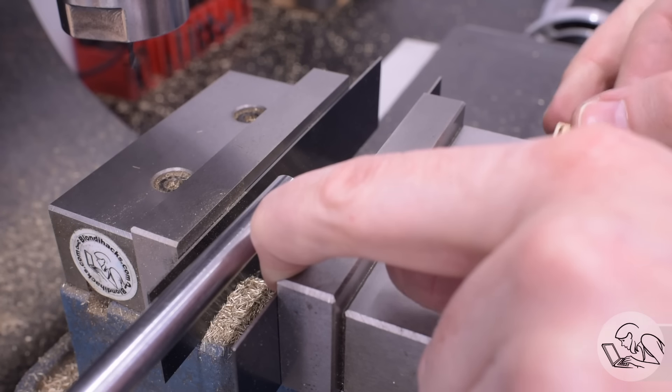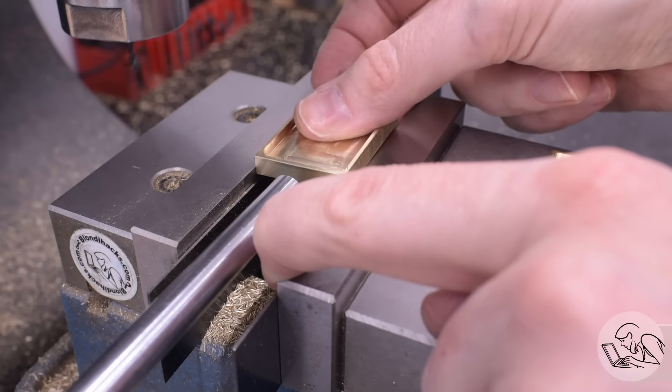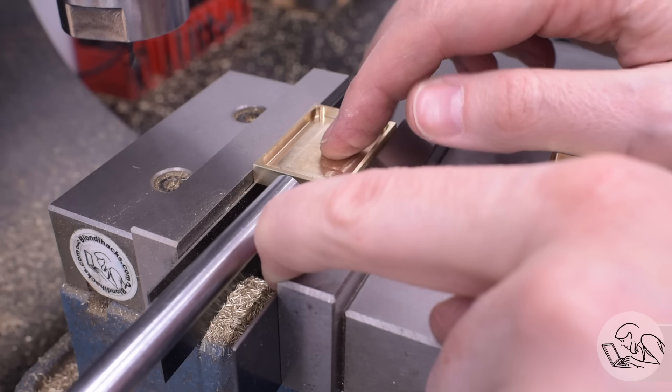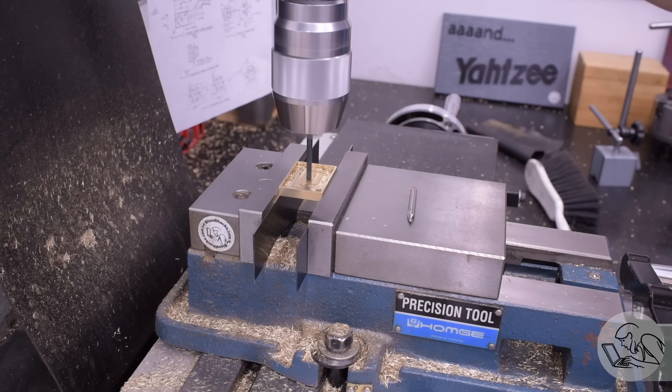Then of course swap out using my end stop and do it all over again. Fun thing about building a locomotive, you do everything at least twice. Sometimes four times, sometimes six times. If you're building a big boy, sometimes 16 or 32 times.